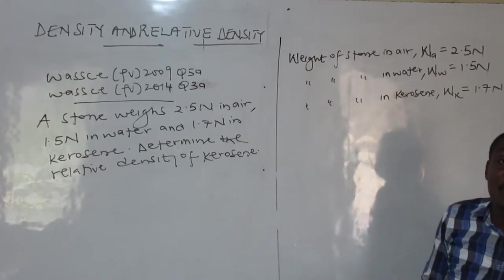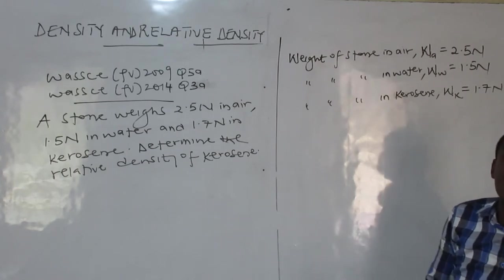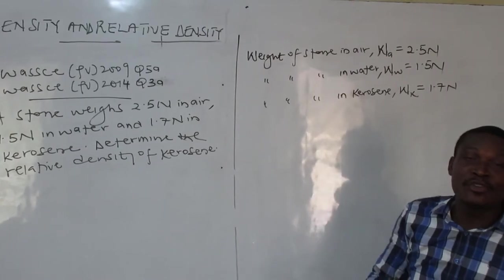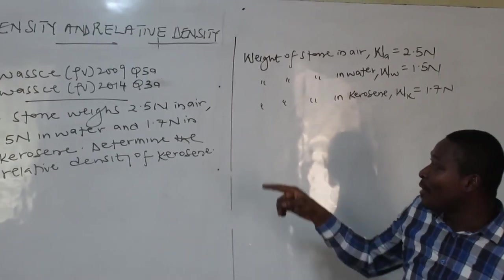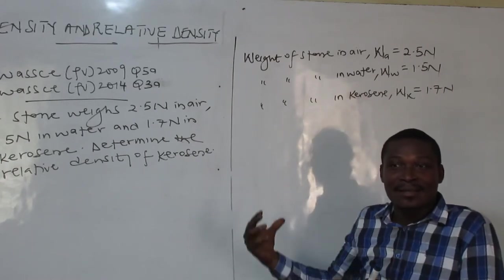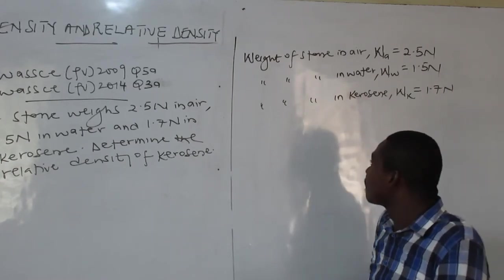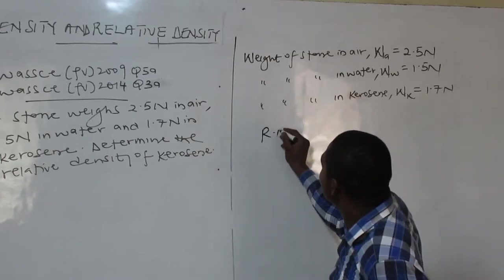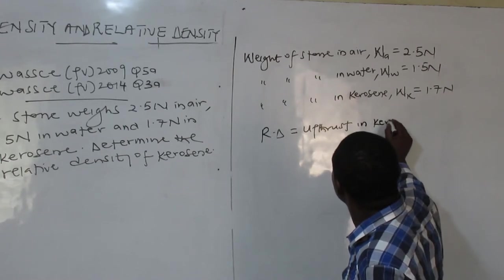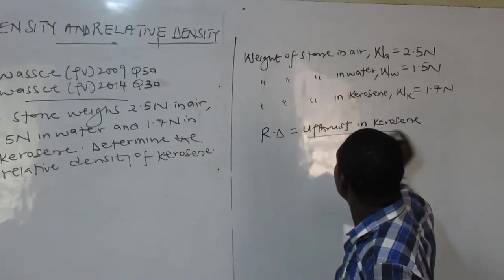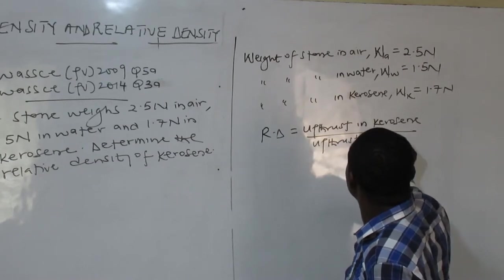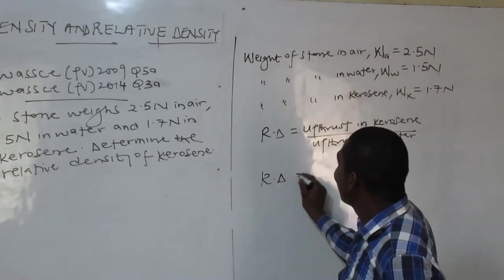So which formula will I use? I cannot use relative density as density of substance over density of water — that won't work. I cannot use weight directly — that won't work either. We are talking about upthrust, so I have to use the formula connecting relative density and upthrust. That is one of the four formulas: relative density equals upthrust in kerosene over upthrust in water.